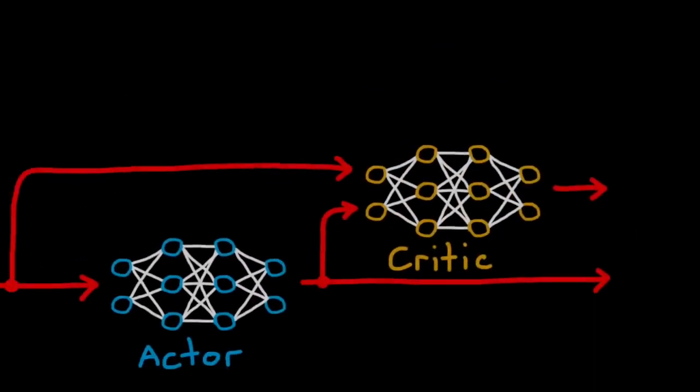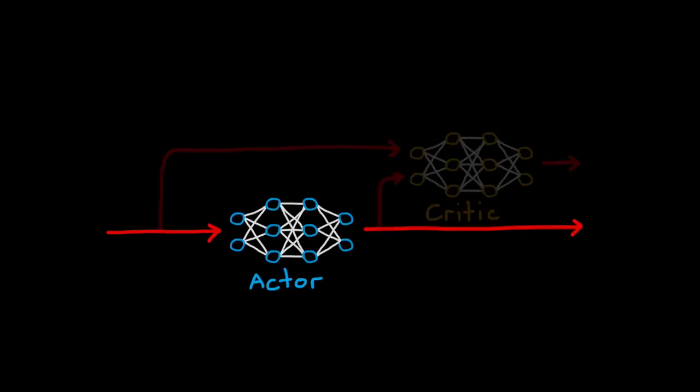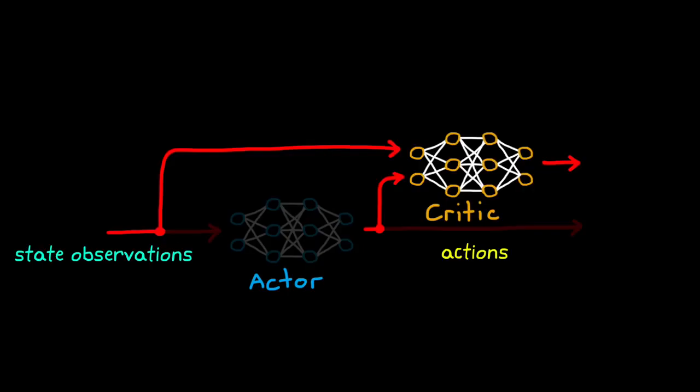This brings us to a merging of the two techniques into a class of algorithms called actor-critic. The actor is a network that is trying to take what it thinks is the best action given the current state, just like we had with the policy function method. And the critic is a second network that is trying to estimate the value of the state and the action that the actor took, like we had with the value-based methods.